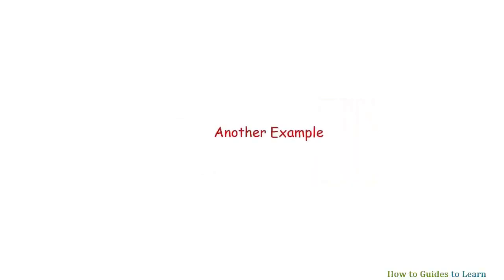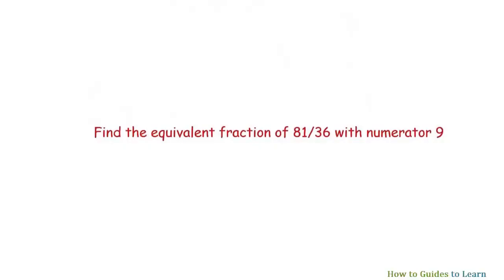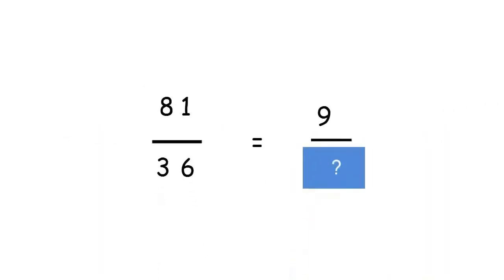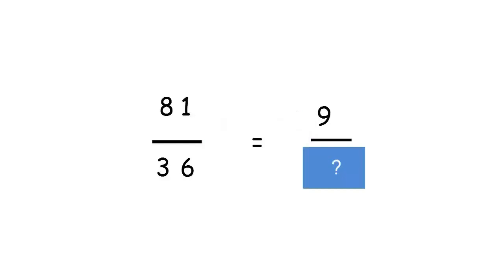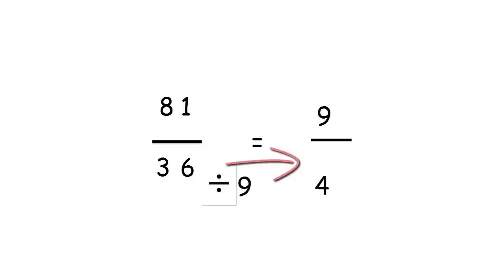Another example. Find the equivalent fraction of 81 by 36 with the numerator nine. First, you have to write the question in a mathematical form. Now, divide 81 by nine — it is equal to nine. So you have to perform division on the denominator also. We divide 36 also by nine and get four. So nine by four is the equivalent fraction of 81 by 36.